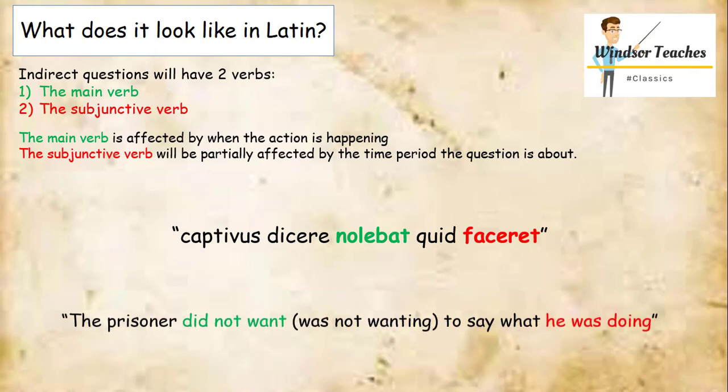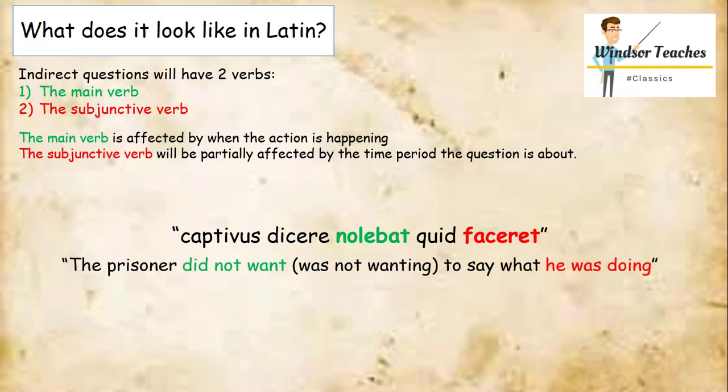Captivus dicere nolebat quid faceret, which means, the prisoner did not want to say what he was doing. So nolebat, the main verb of the sentence is imperfect, did not want, and faceret, is imperfect subjunctive, to say what he was doing.